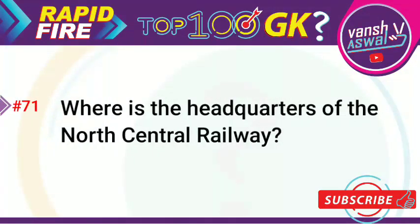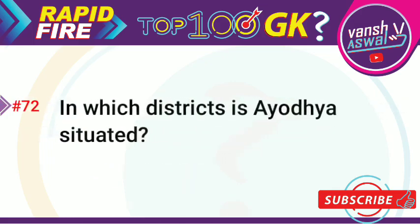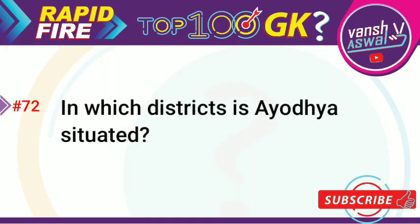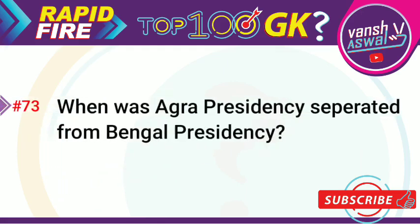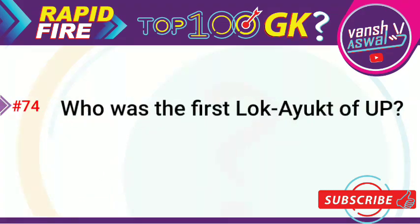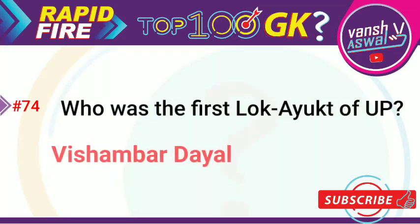Question 71: Where is the headquarters of the North Central Railway? Answer is Allahabad. Question 72: In which district is Ayodhya situated? Answer is Faizabad. Question 73: When was the Agra Presidency separated from Bengal Presidency? Answer is 1833. Question 74: Who was the first Lok Ayukta of UP? Answer is Vishambhar Dayal.